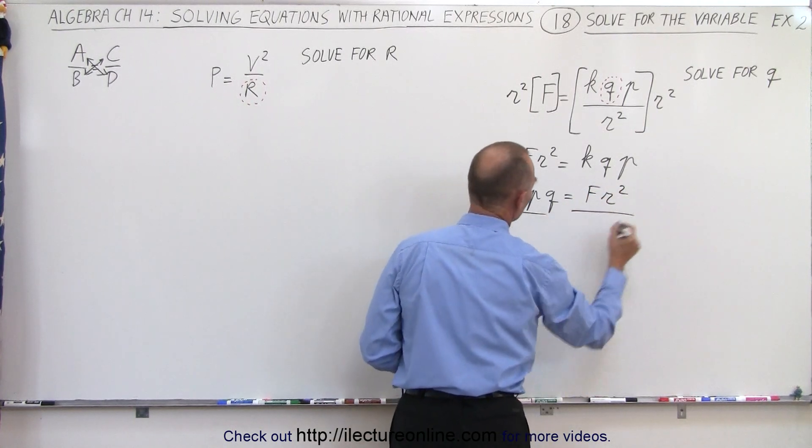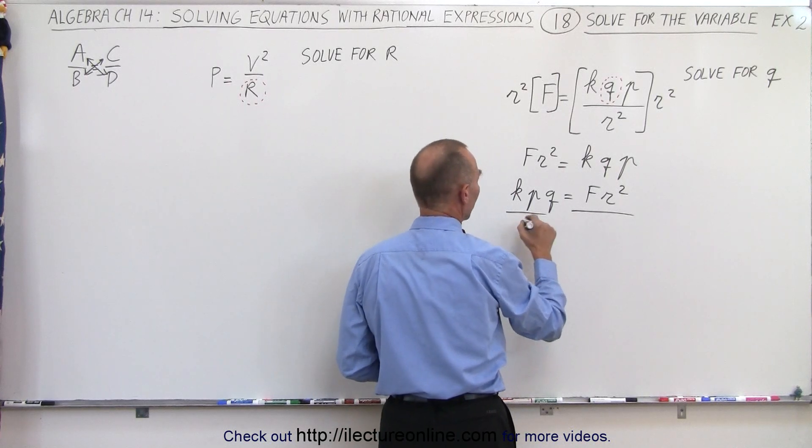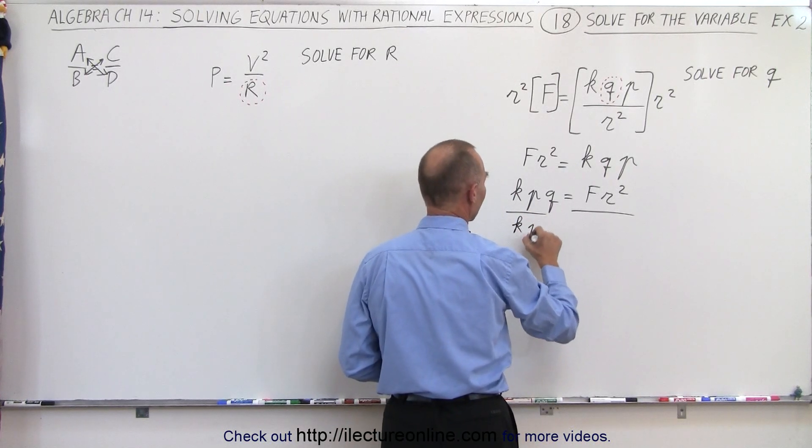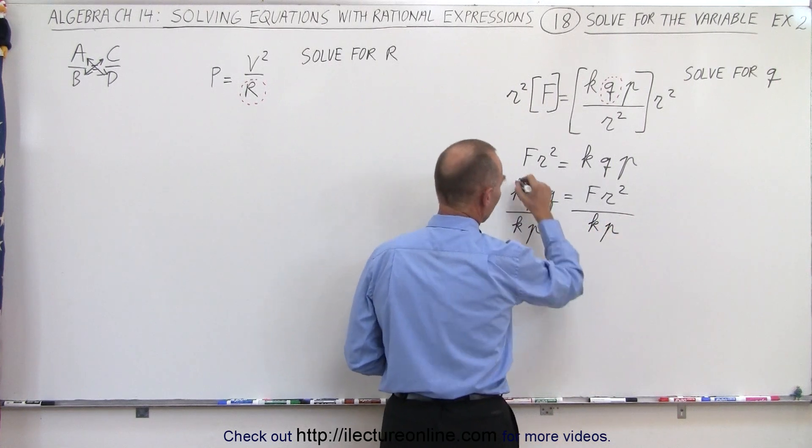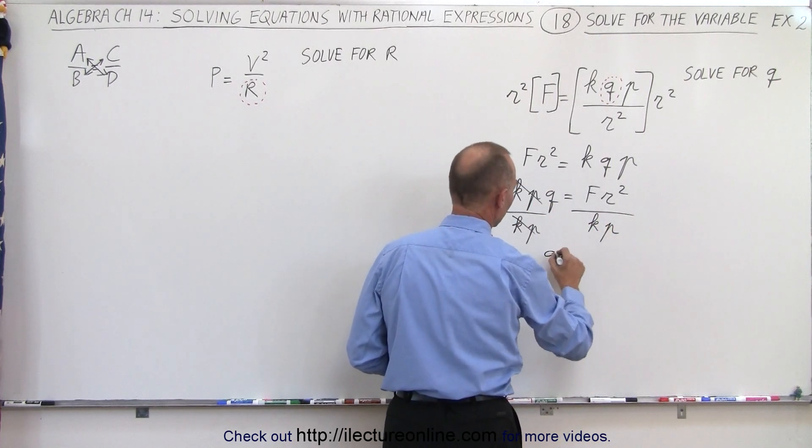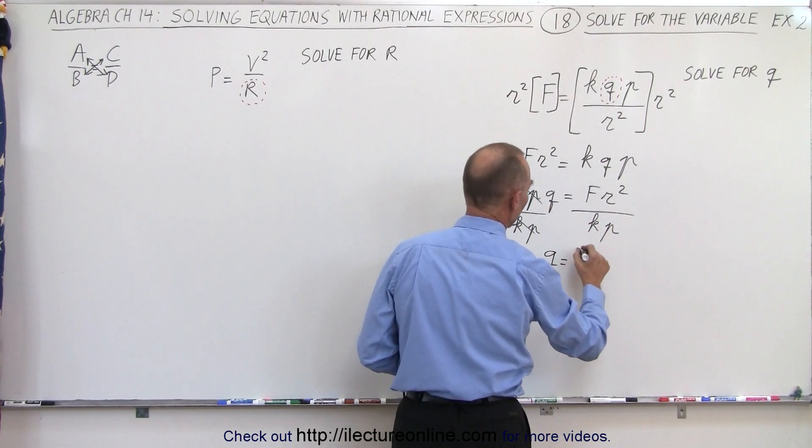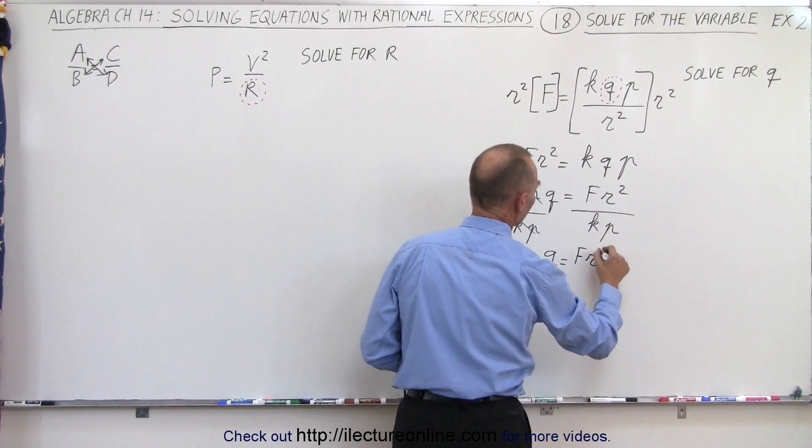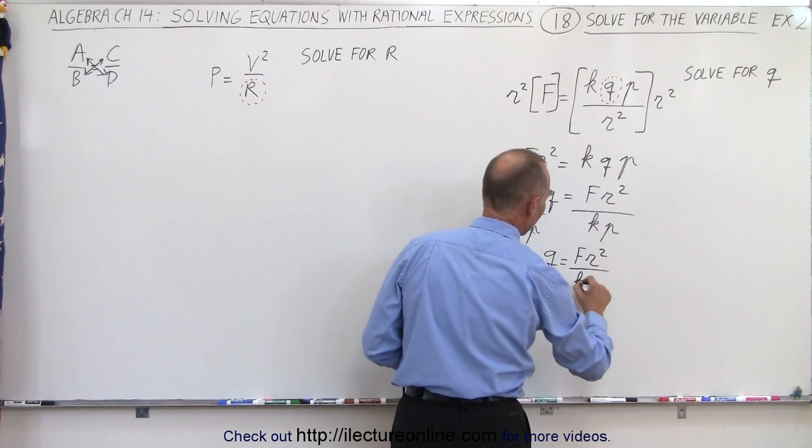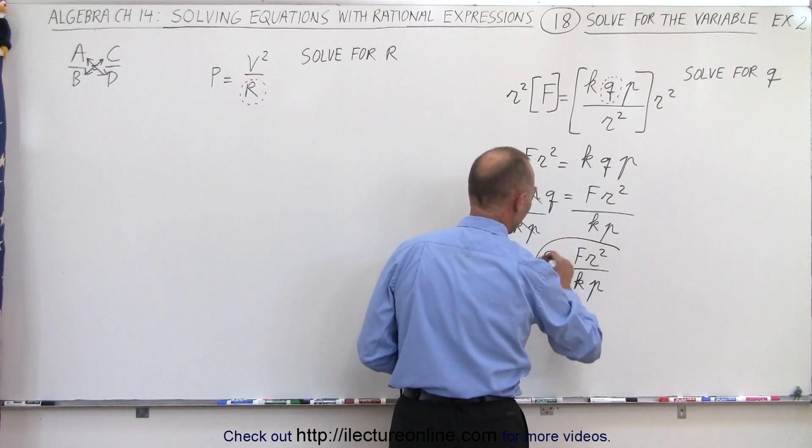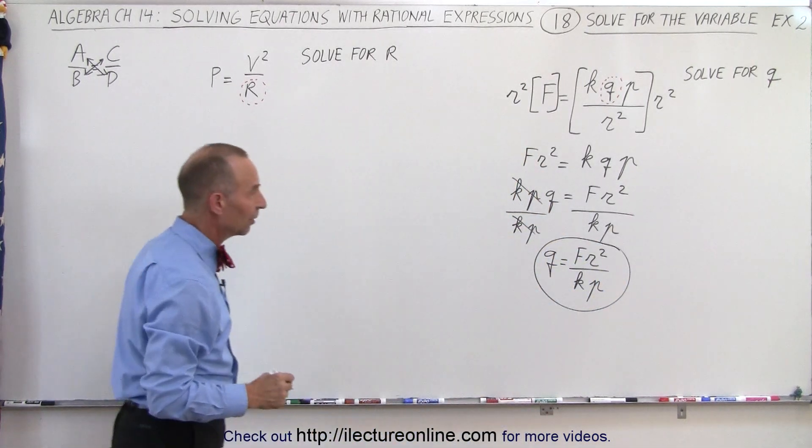And then I'm going to divide both sides of the equation by the coefficients of q, which is k times p. This cancels this, and we're left with q is equal to f r squared divided by k times p. And that's the way we get the desired variable.